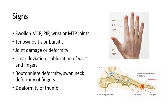Some of the signs: the early signs of rheumatoid arthritis are inflammation without joint damage. These early signs include swollen metacarpophalangeal (MCP), proximal interphalangeal (PIP), and wrist joints, or for the legs, the metatarsophalangeal (MTP) joints. You can see in this picture the MCP, PIP, and DIP joints for the hand, and the red area shows the MTP joint for the leg. We should also look for tenosynovitis or bursitis.